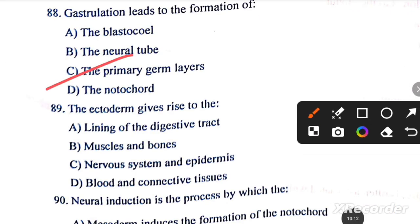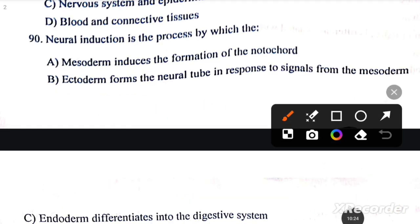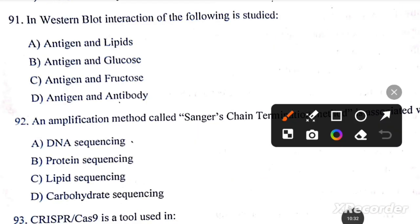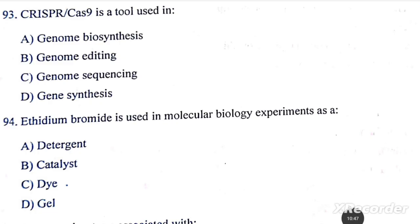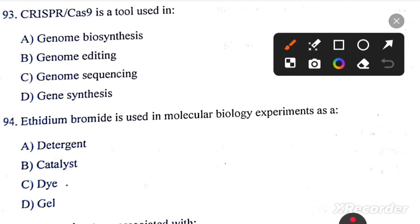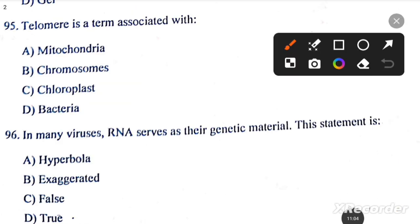Next, gastrulation leads to the formation of primary germ layers. Question number 89: the ectoderm gives rise to the nervous system and epidermis. Neurulation is the process by which the ectoderm forms a neural tube in response to signals from the mesoderm. Western blot, interaction of the following is studied: antigen and antibody. An amplification method called Sanger's chain termination method is associated with DNA sequencing. CRISPR-Cas9 is a tool used in genome editing. Next question: ethidium bromide is used in molecular biology experiments as a dye. Telomere is a term associated with chromosomes.